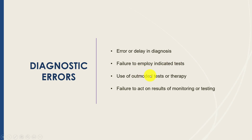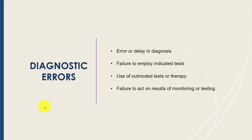Diagnostic errors can also result from using outmoded tests or outmoded therapies that are no longer standard of care, or from a failure to act on results of monitoring and testing. For example, you send off a lab for a patient you are concerned has an infection; the lab comes back indicating elevated white blood cell count and maybe a shift, but no one checks those results. Several hours go by, and the patient does not get timely initiation of antibiotics — a simple example of a delay in diagnosing and starting treatment.